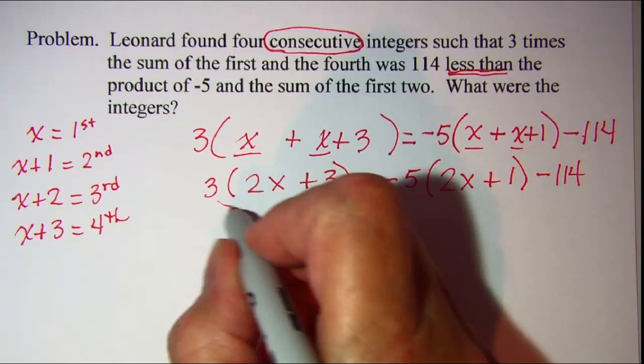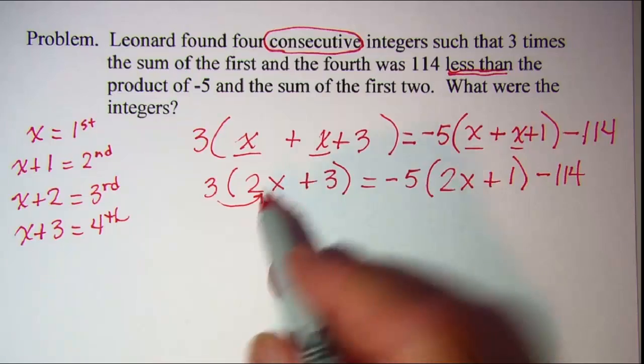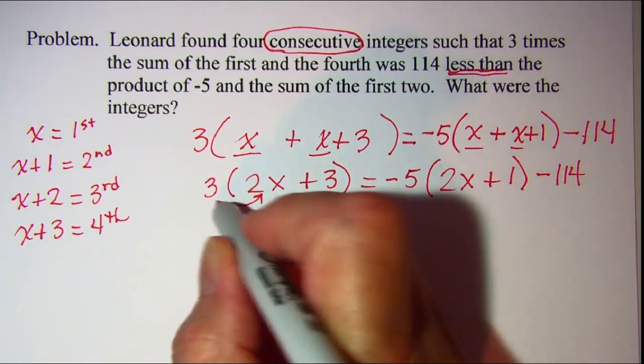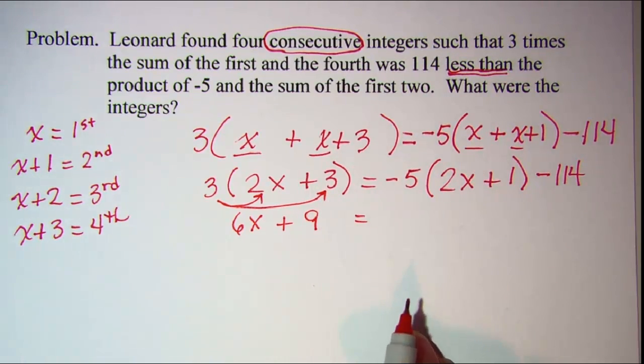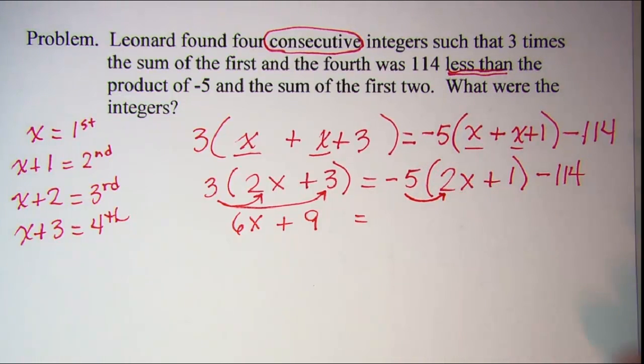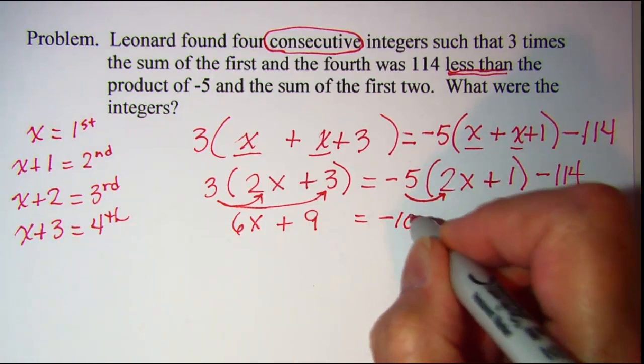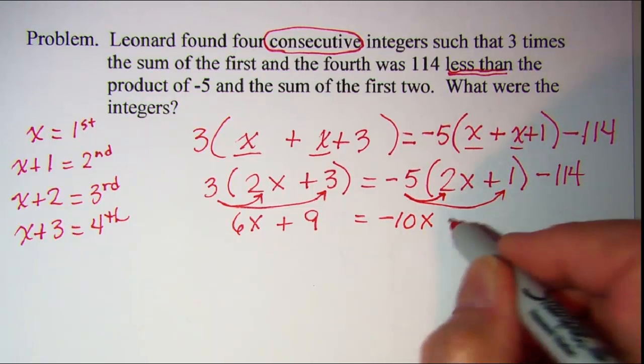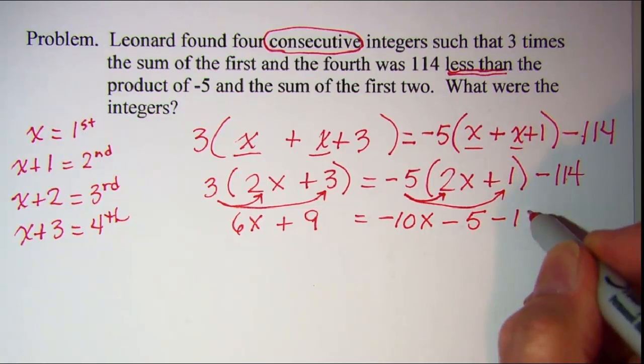Next let's distribute the 3 through this binomial. 3 times 2x is 6x and then 3 times 3 is 9. Now on the right side let's distribute this negative 5 through the parentheses. Negative 5 times 2x is negative 10x.